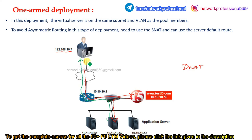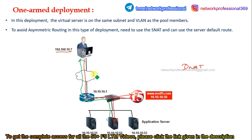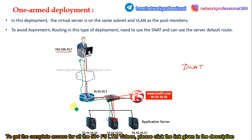Since F5 does not perform source NAT by default, when the server receives the request, it sees the source IP 192.168.10.7. When replying, instead of sending back to F5, it directly responds to the user through the default gateway — the router. This is asymmetric routing: the request comes from the user through the router to F5 and then to the server, but the response bypasses F5 and goes directly to the user. We can overcome this drawback by implementing SNAT — source NAT.